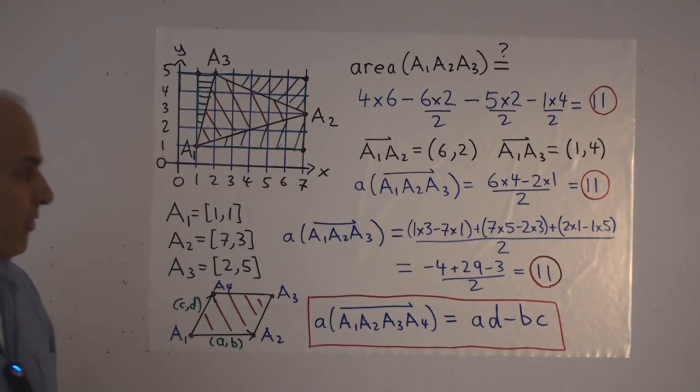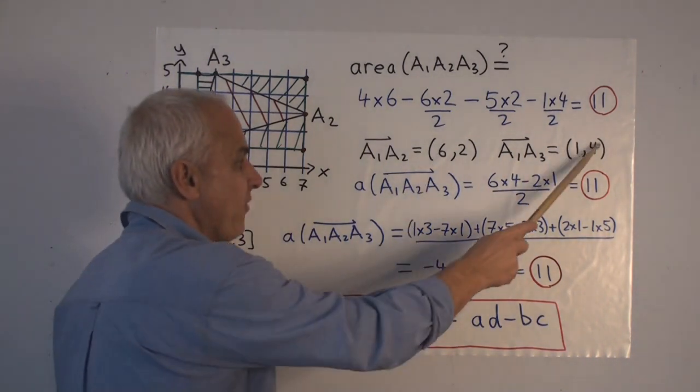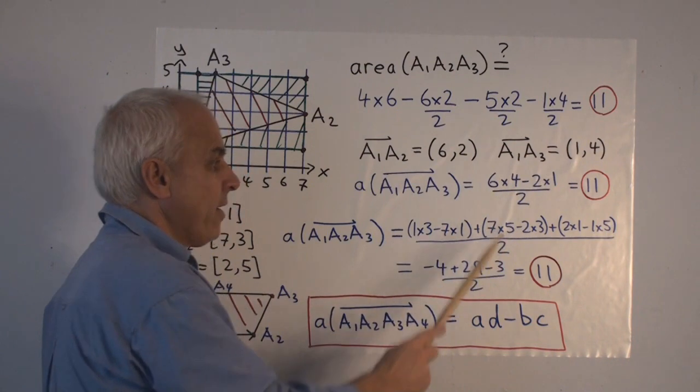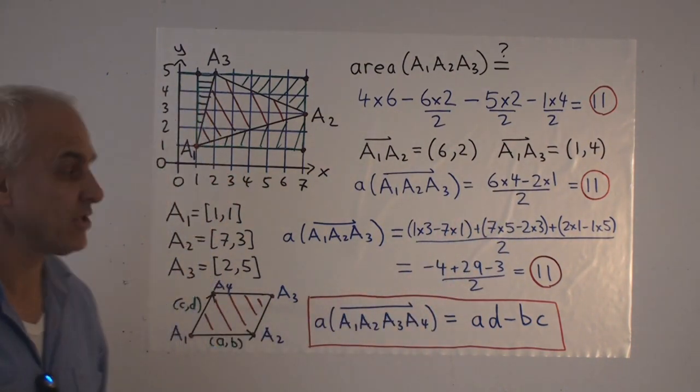And then the definition says that, alright, the area is then 6 times 4 minus 2 times 1, all over 2, which is also 11.